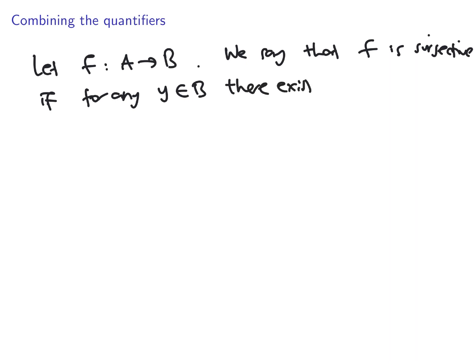You can also actually combine quantifiers. So, one famous example is the following. Let F be a function from A to B. We say that F is surjective if for any Y in B, there exists X in A such that F of X is equal to Y. This is the definition of surjectivity. So, you see here, there's for any, and there exists.